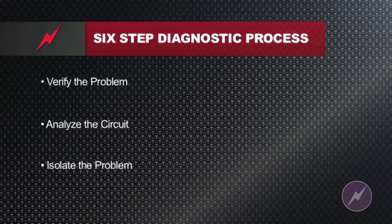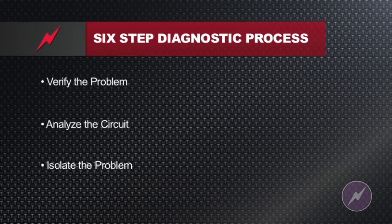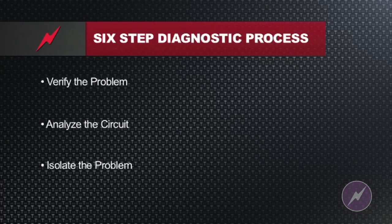Secondly, isolating the problem. Once you've analyzed the circuit and you see that there are deficiencies within the circuit, it's going to be important to make sure that we isolate the problem. Through demarcation in a wiring schematic, you're going to be able to access specific parts within the vehicle so that it makes it easy to troubleshoot that one section of the circuit.